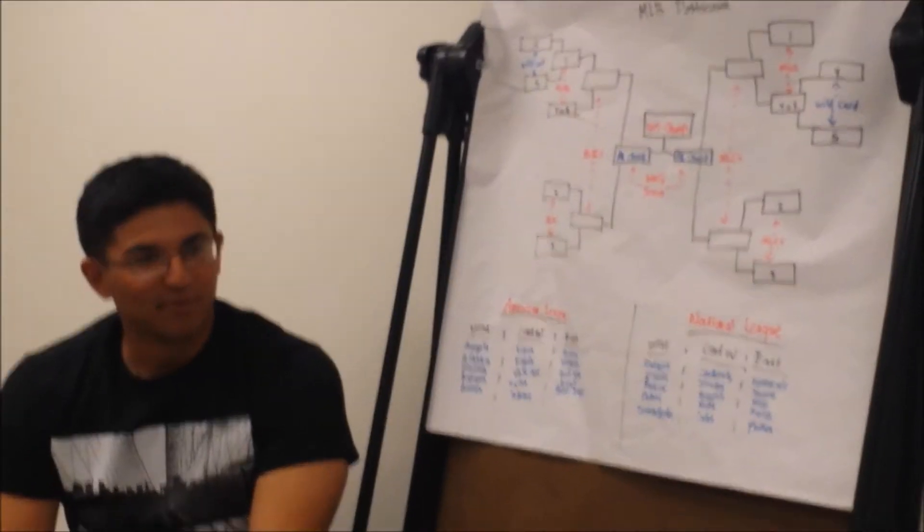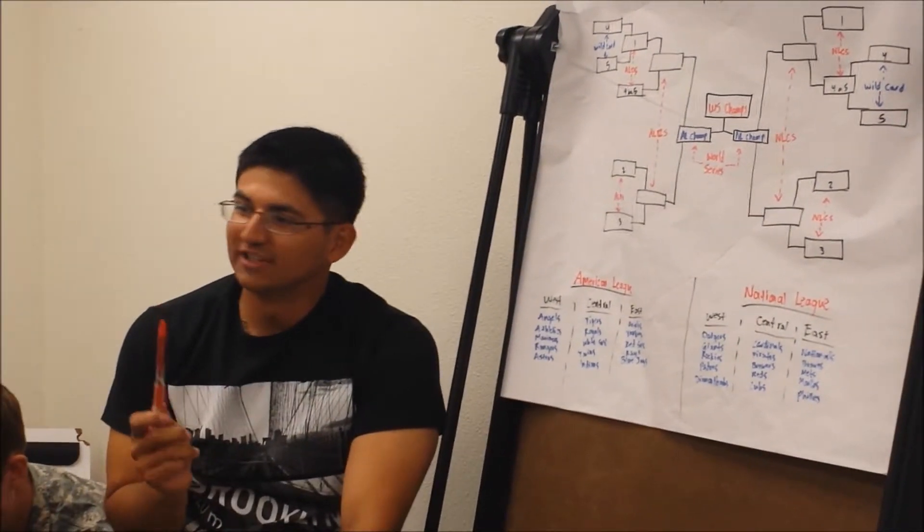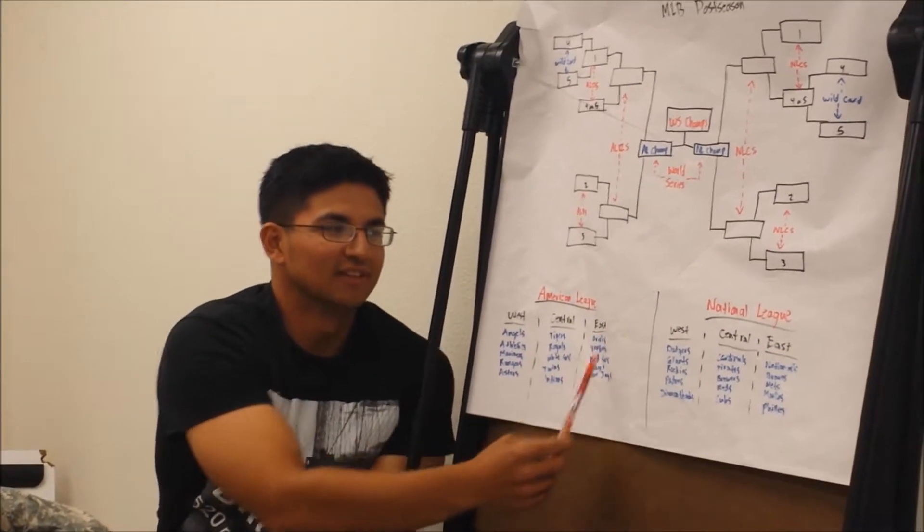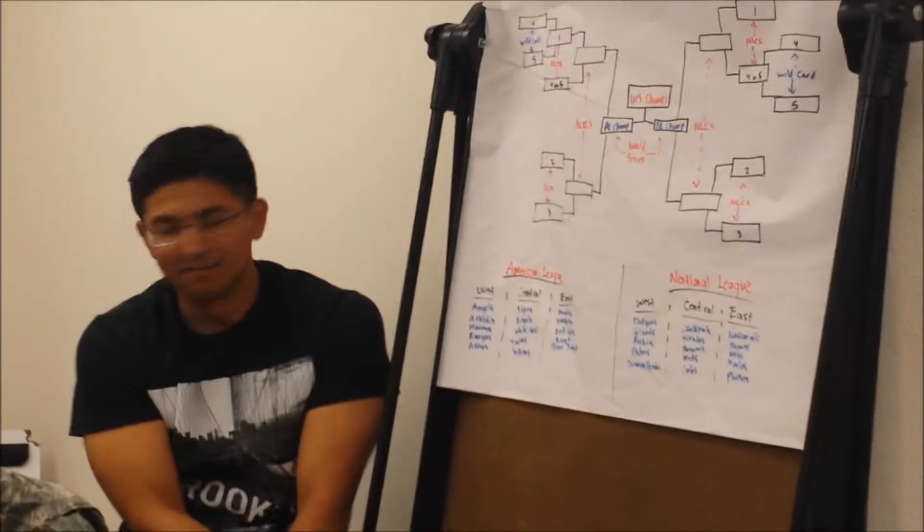First things first, we've got to break down the basics of baseball. They have 30 Major League Baseball teams, and those 30 teams are broken down into two different leagues. As you can see here, you've got the American League and the National League. And each league has 15 teams.